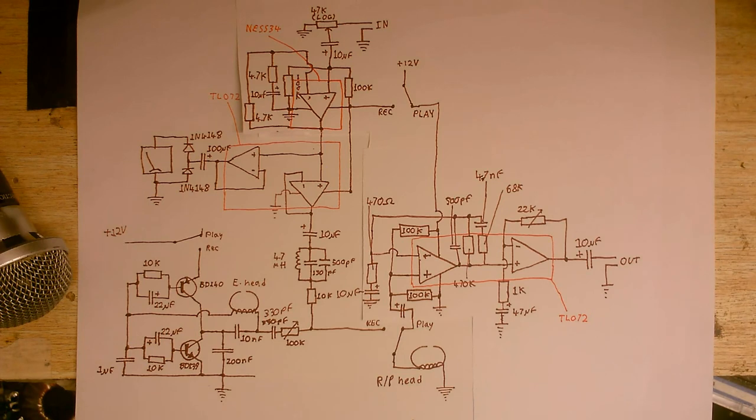It uses the erase head itself as the actual bias oscillator coil. So that head's doing two jobs at once, it's erasing the tape and being the bias oscillator coil.